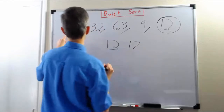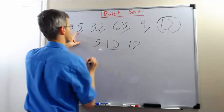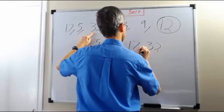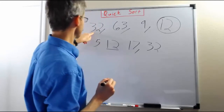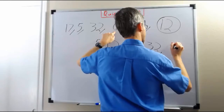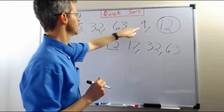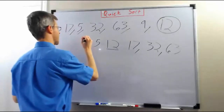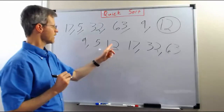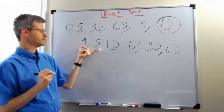17 is greater than the pivot so we're going to write it after the pivot. 5 is less than the pivot so we're going to write it before the pivot. 32 is greater than the pivot so we're going to write it after the 17 that's already there, which is after the 12. 63 is also greater than the pivot so we're going to add it to the end. 9 is less than the pivot, so we're going to add it to the list of numbers that are less than the pivot. So now this list of numbers is all less than the pivot, less than 12.